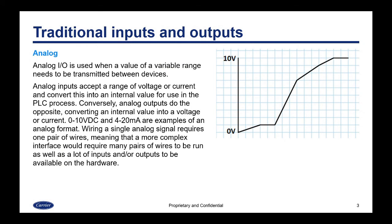With traditional inputs and outputs, we'll start with analog. Analog I/O is used when a value of a variable range needs to be transmitted between devices. Analog inputs can accept a range of voltage or current and convert this into an internal value for use in the PLC process. Conversely, analog outputs do the opposite — they convert an internal value into a voltage or current. 0 to 10 volt DC and 4 to 20 milliamp are examples of analog that most of you are familiar with.